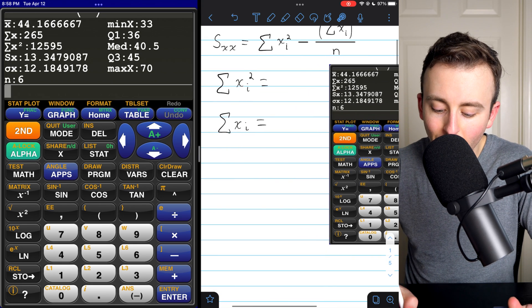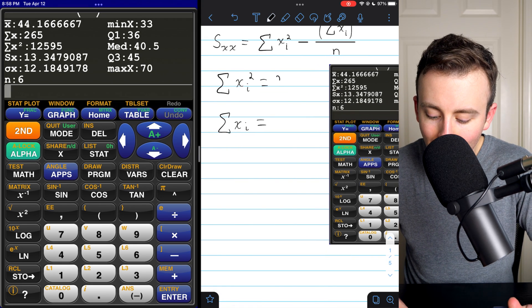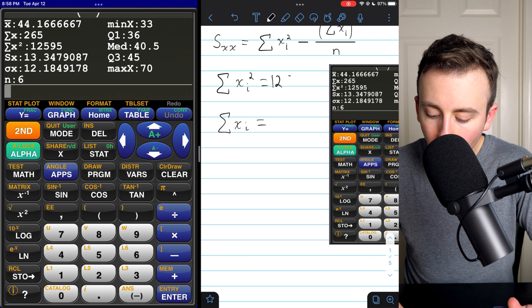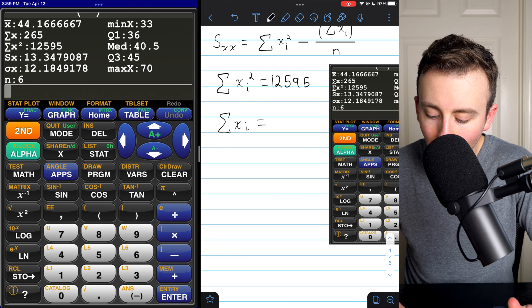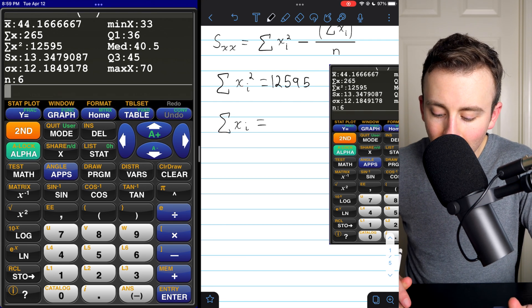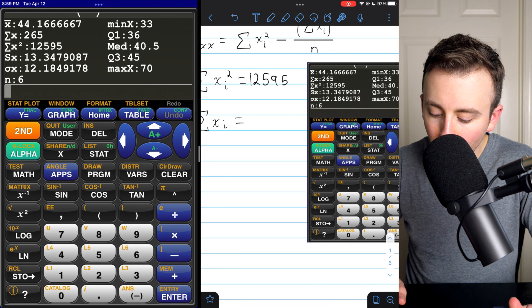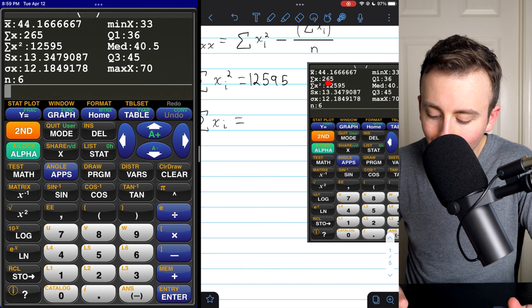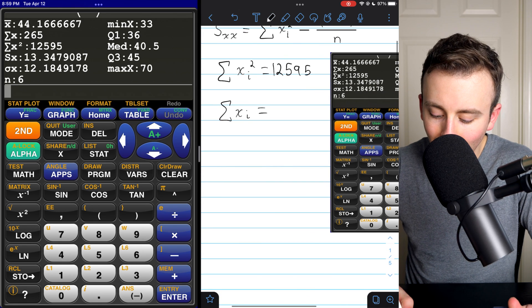12,595. That's the sum of the data value squared, 12,595. The other thing we need is the sum of the data values, which the calculator gives us right here, sigma X. That's 265.